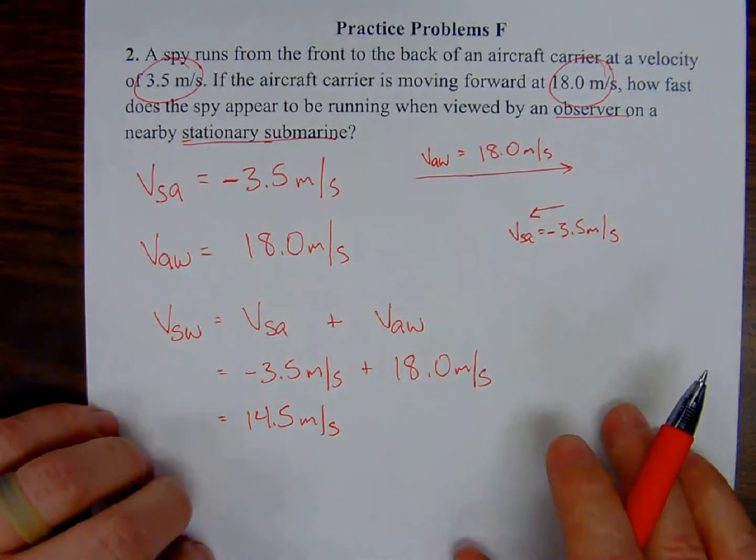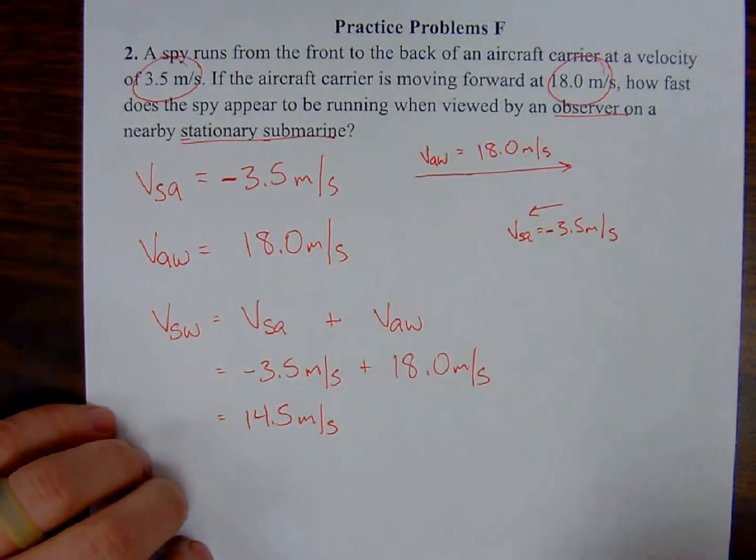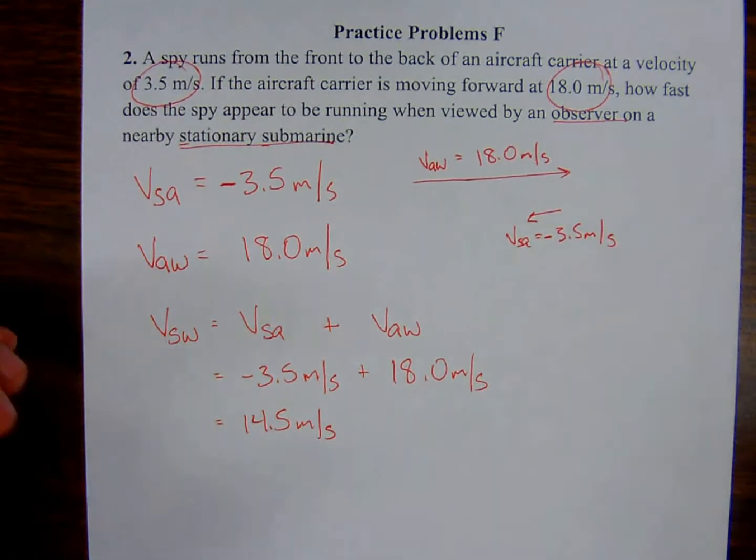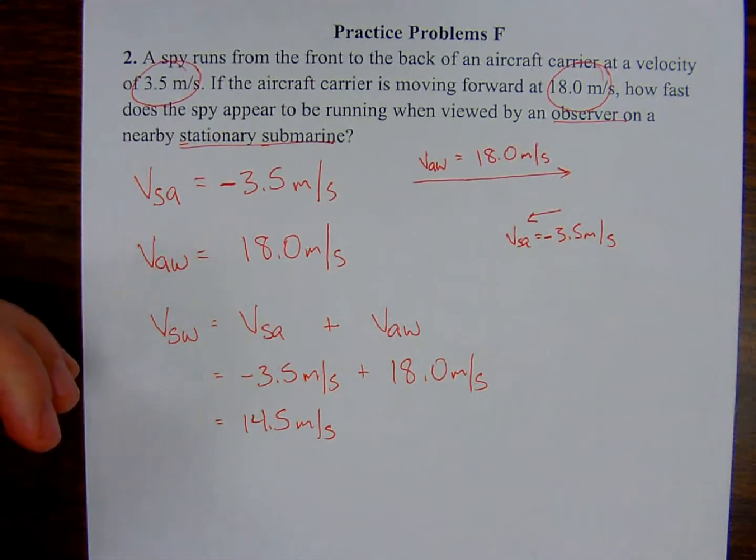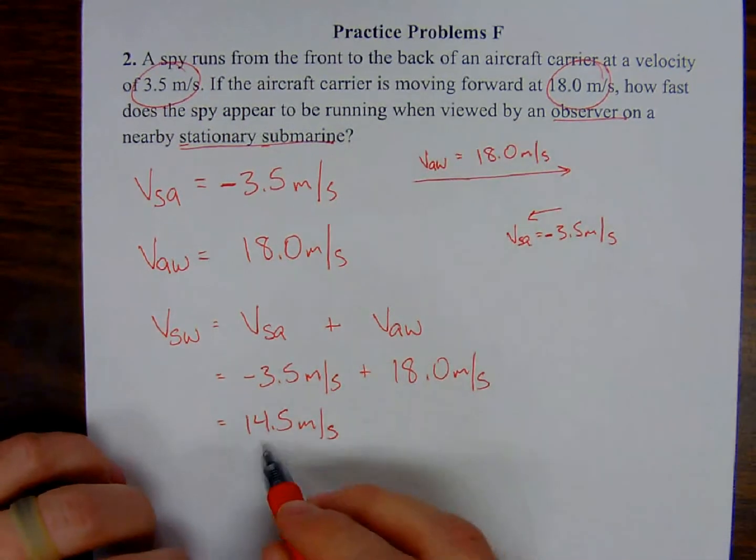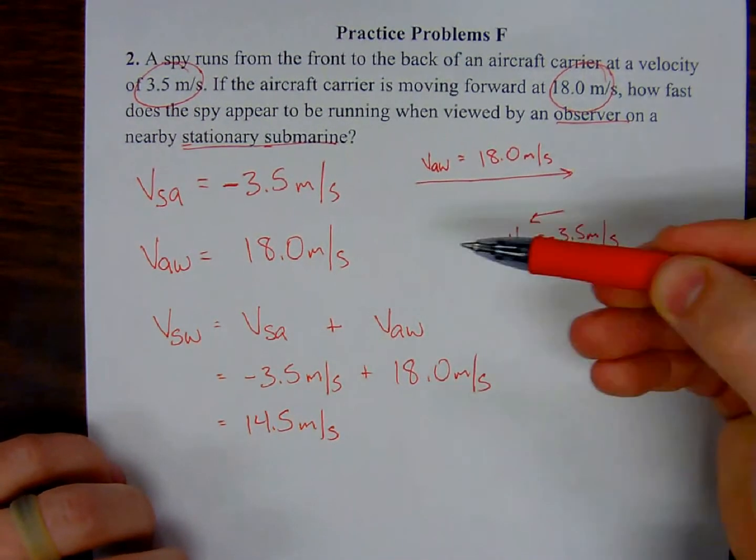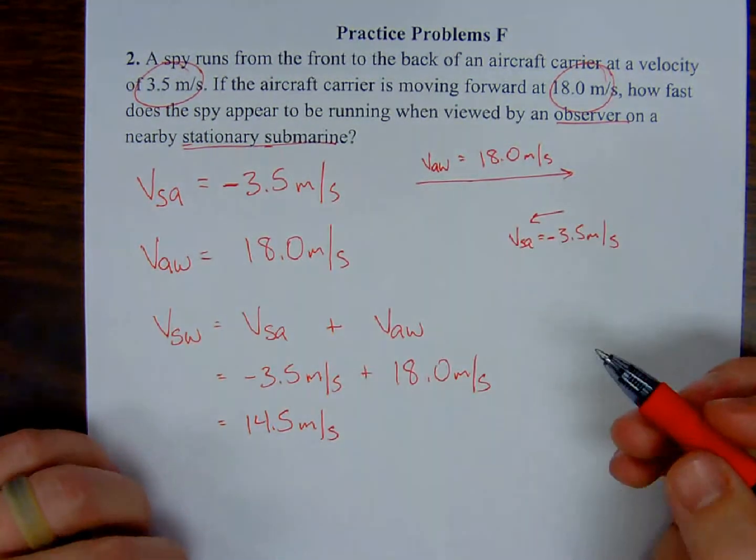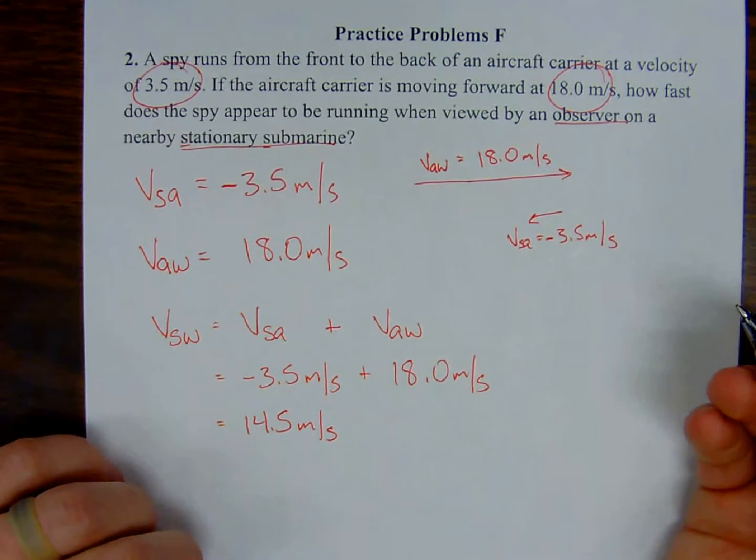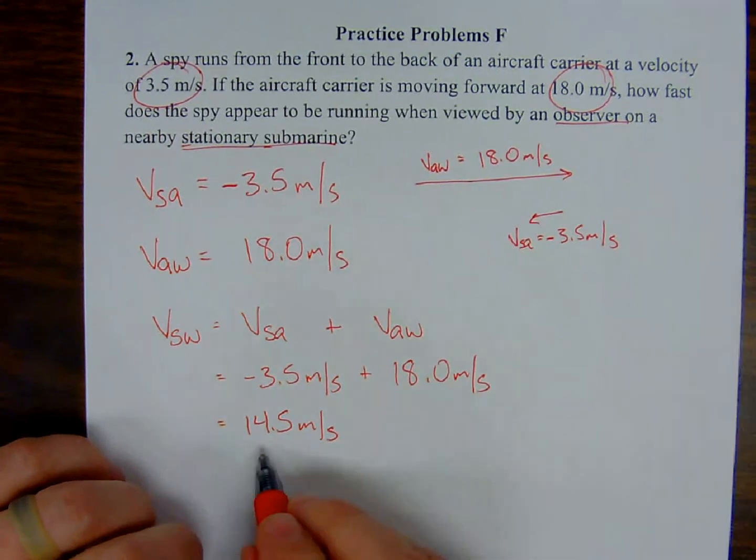But because the aircraft carrier is traveling faster than the spy, the spy is moving overall 14.5 meters per second in the direction that the aircraft carrier is moving.